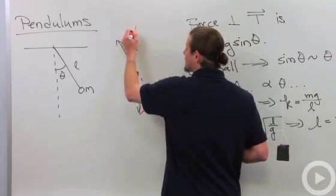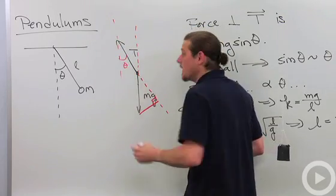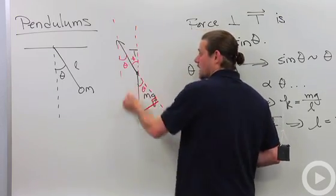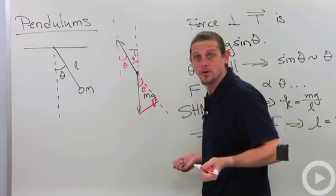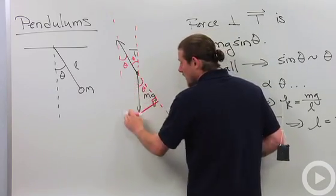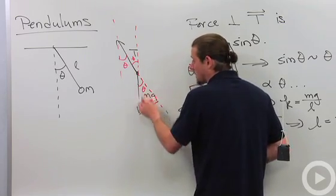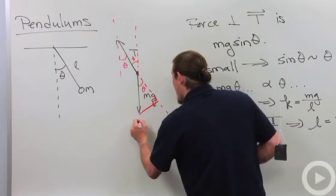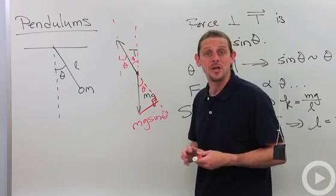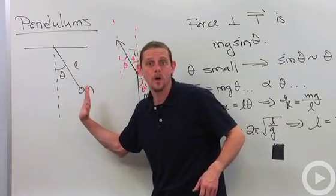Well this angle right here is theta. That means this angle is theta. That means this angle is theta because of vertical angles from geometry. Now this angle is theta. This line is mg long. So that means that this part, the part that is opposite the angle, must be mg sine theta. So we've got a force mg sine theta that's pulling to try to make the angle smaller.